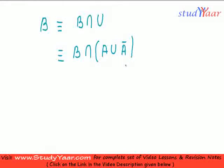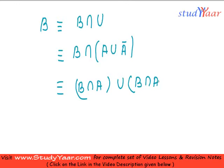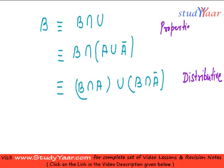Now what I can do is apply the distributive property. So this is equivalent to b intersection a, union b intersection a bar. This is the distributive property of union and intersection.